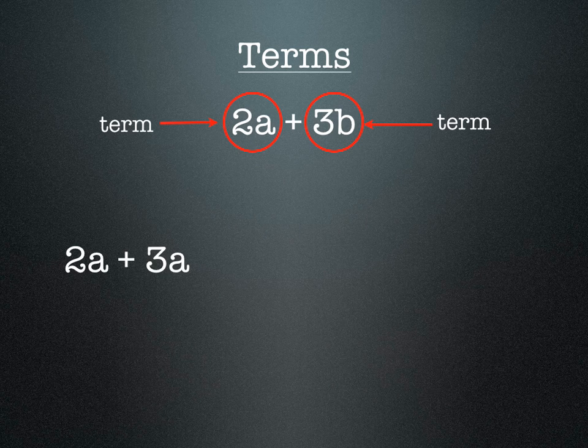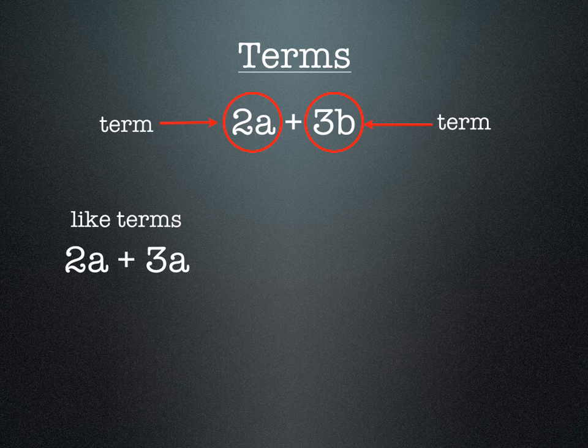If we have 2a + 3a, you'll notice that the letters are the same - they both have a's in them. These are what we call like terms because the letters are the same. If we have like terms like this, we can add them together, so we get 2a + 3a = 5a.